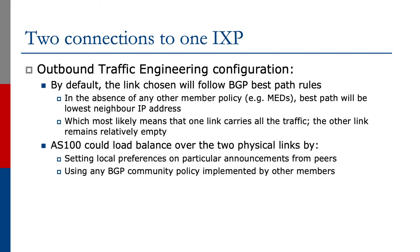Let's look at how the outbound traffic engineering would be configured. By default, the link chosen will follow BGP best path rules. In the absence of any other member policy — for example, members might send multi-exit discriminators or MEDs — the best path will basically come down to the lowest neighbor IP address on the exchange point LAN, which most likely means that one link will carry all the traffic and the other link will remain relatively empty.